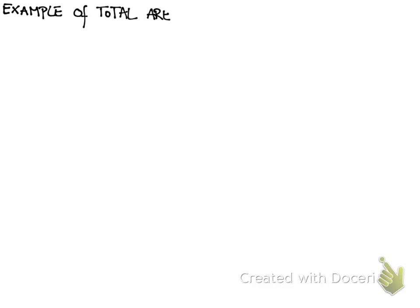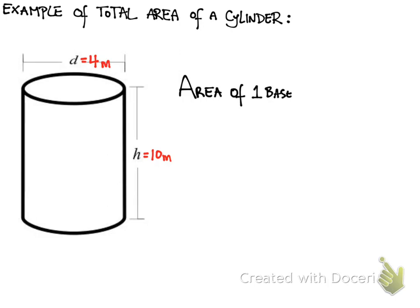Here's an example of total area of a cylinder. Total area means we're going to include the area of the base, both bases.